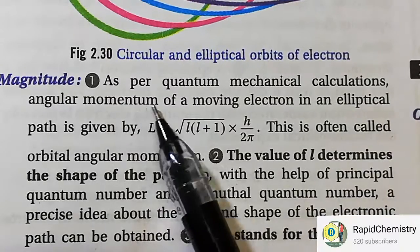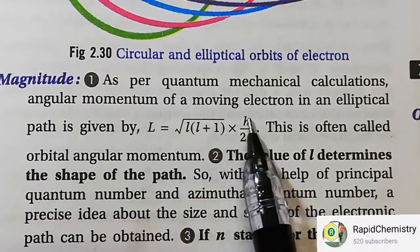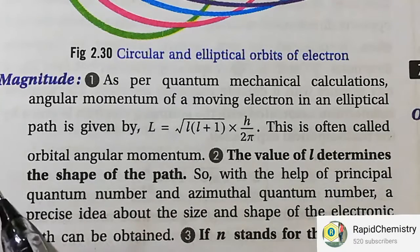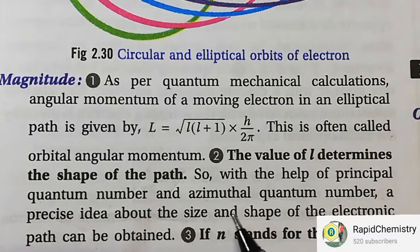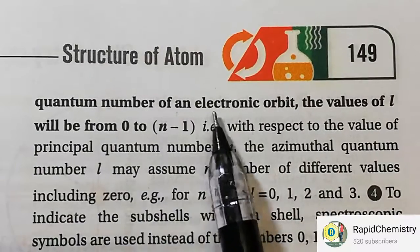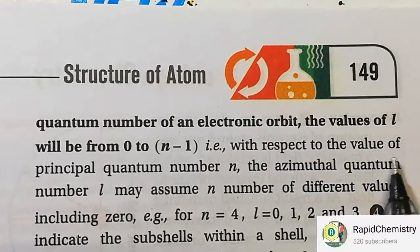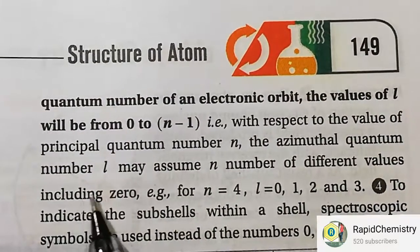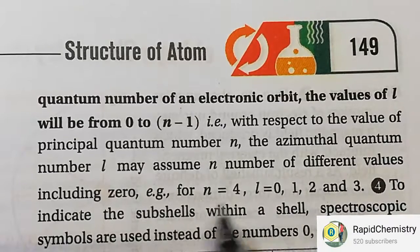The angular momentum of a moving electron in an elliptical path is given by a quantum mechanical formula — that derivation is not in our syllabus, just remember the statement. This is often called orbital angular momentum. The value of L, the azimuthal quantum number, determines the shape of the path. With the help of the principal quantum number and the azimuthal quantum number, a precise idea about the size and shape of the electronic path can be obtained. If N is the principal quantum number, the values of L will be from 0 to N minus 1. So if N equals 4, L has values 0, 1, 2, 3; if N equals 3, L has values 0, 1, 2; if N equals 2, L has values 0 and 1.